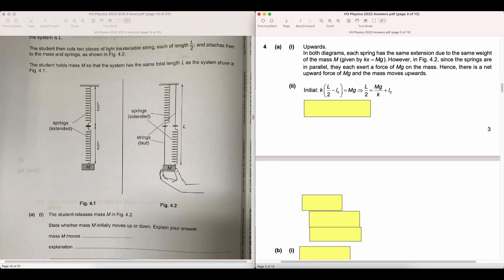So for figure 4.1, this is the equilibrium. Mg is the weight of the object. And K times L over 2 minus L0 is the tension in the spring. Rearranging gives us big L in terms of L0 and K.